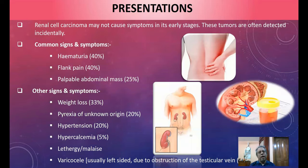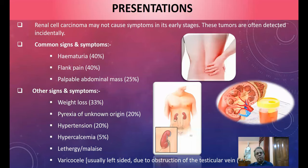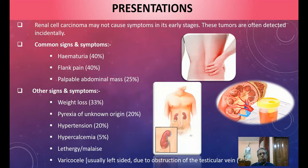Other symptoms associated with renal cell carcinoma include weight loss in 33% of patients, anorexia, nausea, and fever of unknown origin — one cause of pyrexia of unknown origin is renal cell carcinoma, so an ultrasonography should be done to evaluate for a mass lesion. Other features include hypertension, hypercalcemia, lethargy, and malaise.